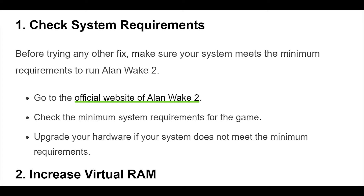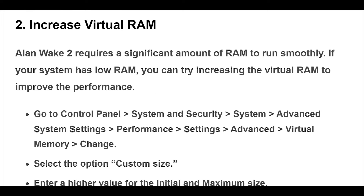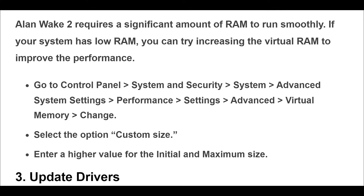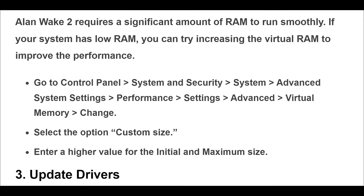2. Alan Wake 2 requires a significant amount of RAM to run smoothly. If your system has low RAM, you can try increasing the virtual RAM to improve the performance. Go to Control Panel > System and Security > System > Advanced System Settings > Performance Settings > Advanced > Virtual Memory > Change. Select the option Custom Size and enter a higher value for the initial and maximum size.